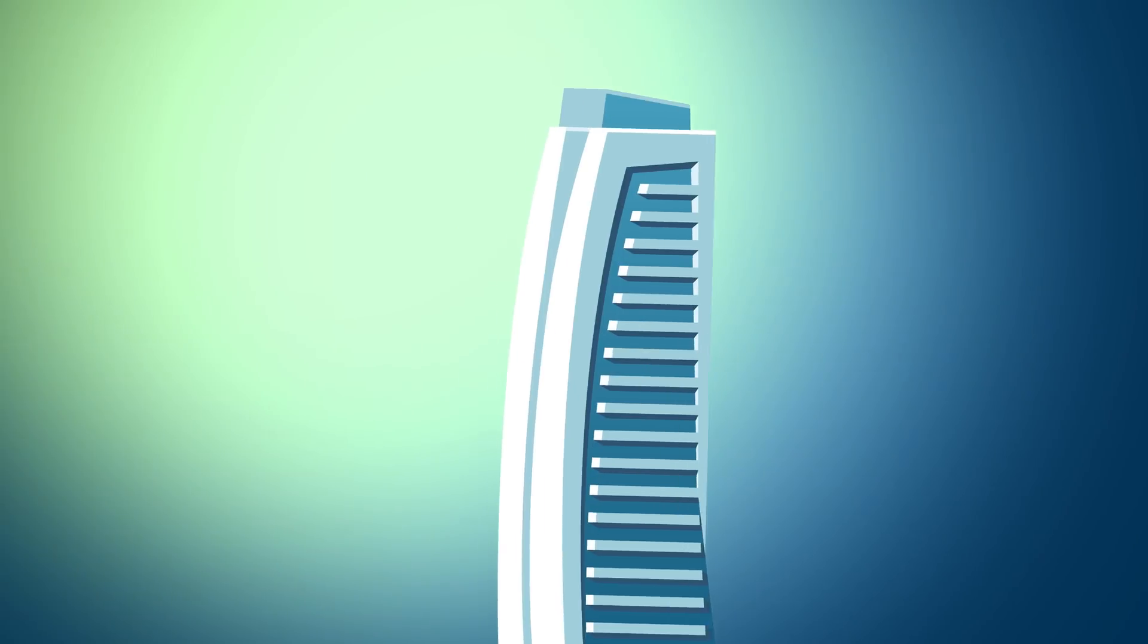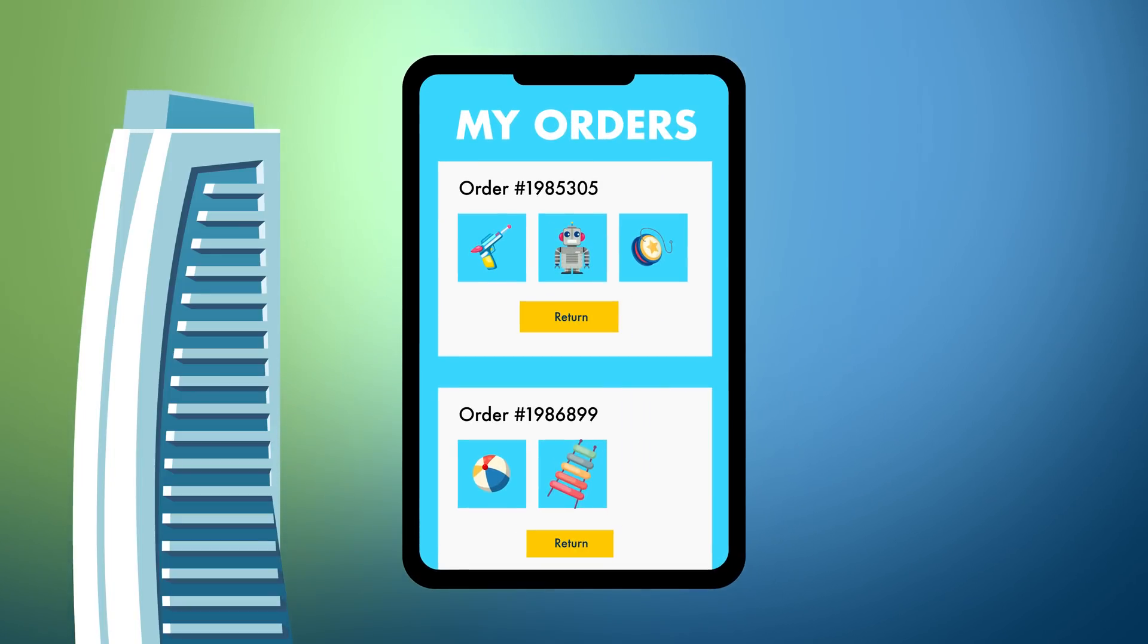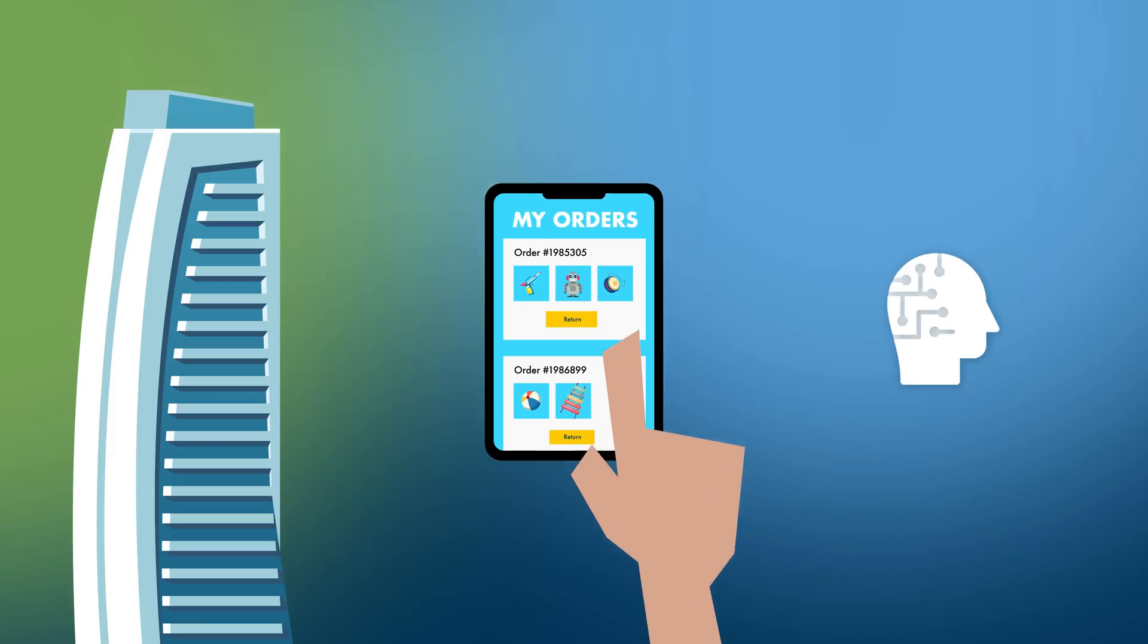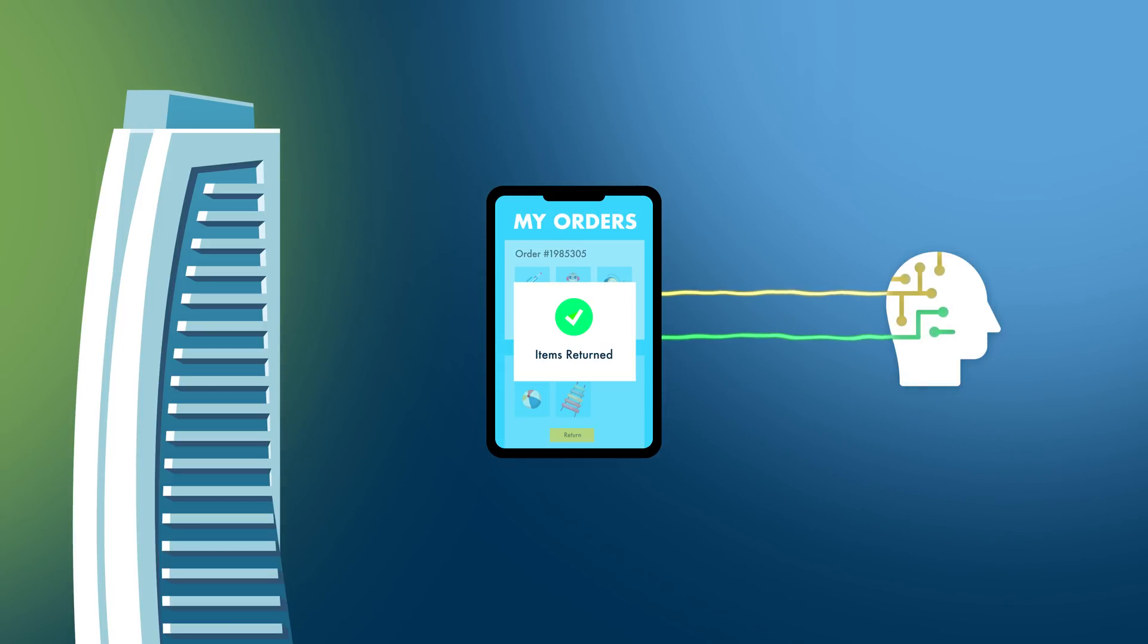So let's get back to our sample scenario. Company A adds a return button in the listing of each order a customer places online. When a customer clicks on that button, the AI system analyzes a bunch of data to give the customer an immediate reply. Specifically, the AI looks at things like this.